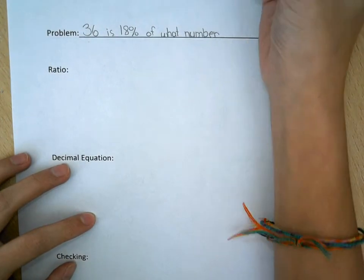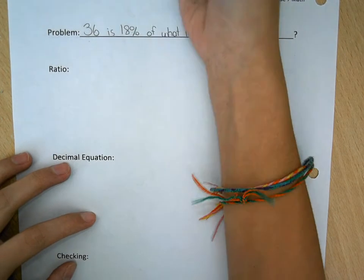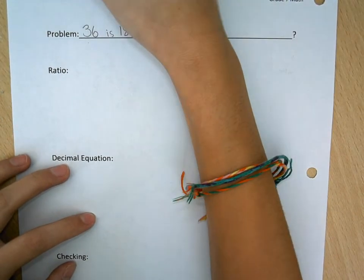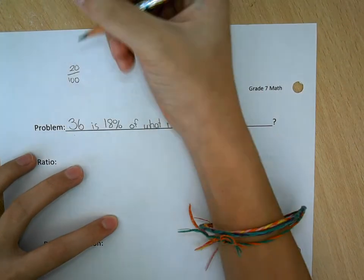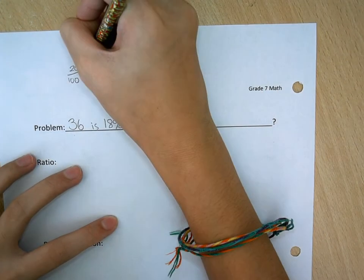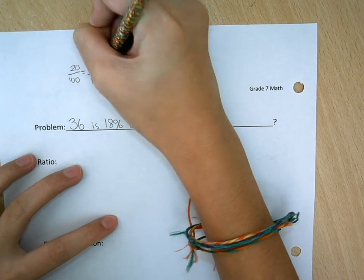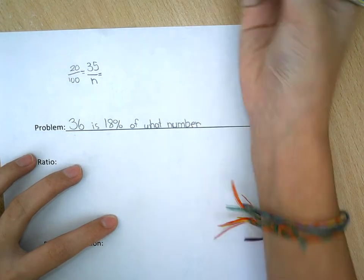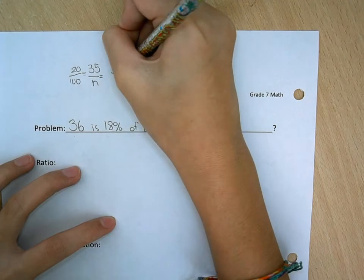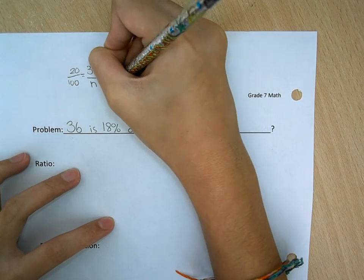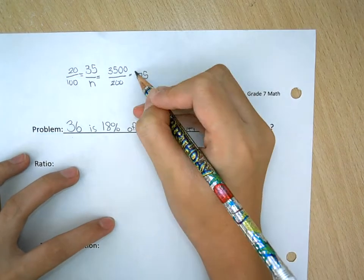So I'm going to do ratio. And this would be 20, so 20 over 100 equals 35 over N, which would equal 3500 over 200, which would equal 175. So the answer should be around here.